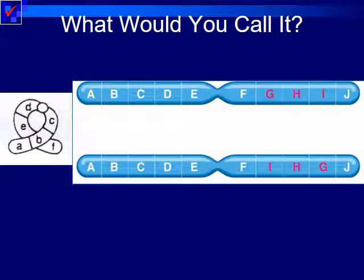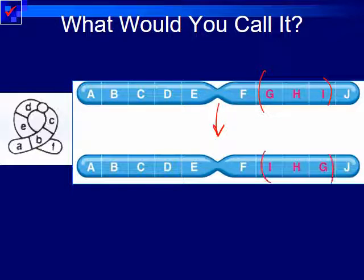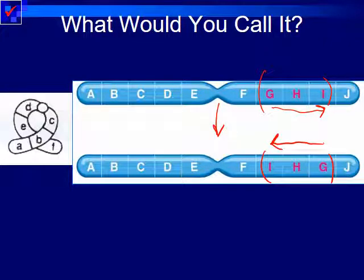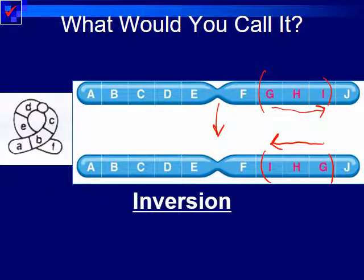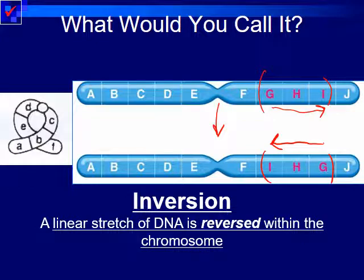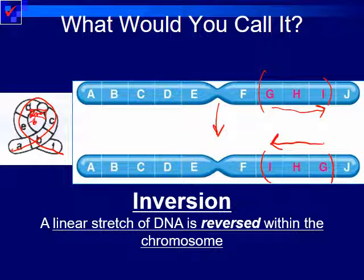Here we originally had A, B, C, D, E, F, G, H, I, J. After the mutation, we had A, B, C, D, E, F, I, H, G, J. If you look at that segment, you'll notice it's the same sequence but in reverse. Part of the code went ahead and inverted, or reversed itself. This is what we call inversion, where a linear stretch of DNA is reversed within the chromosome. A telltale sign you're looking at inversion is you'll always see a loop — think of it like being on a roller coaster when you're inverted, upside down.